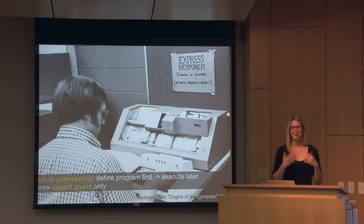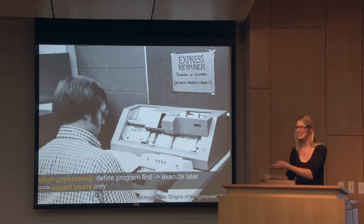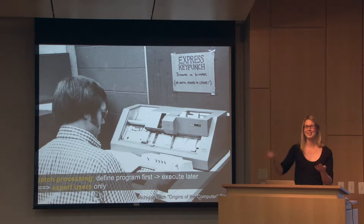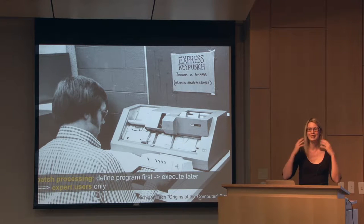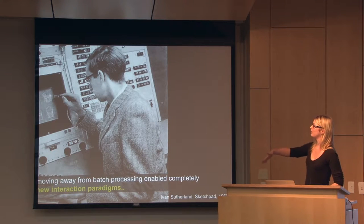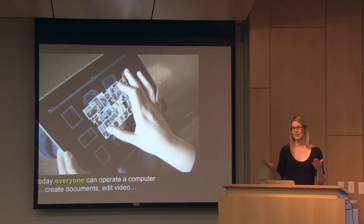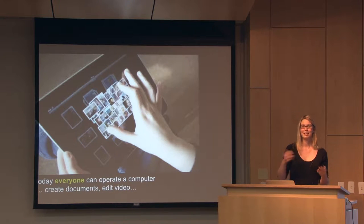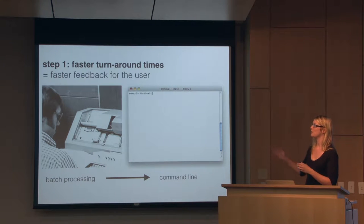3D printers are currently operated very similar to the batch processing style of punch cards in the early days of computing. You create your 3D model, start your print job in the evening, and then the next day you come back to see your result. If it wasn't what you expected, you have to do the entire cycle again and wait another day. Batch processing is really limited to expert users because they have to think a lot ahead — trial and error really doesn't work here. In the history of computing, when we moved away from batch processing, we enabled completely new interaction paradigms. This allowed a lot of people to use computers and do very complex tasks, such as document editing — which was an expert task in the 50s and 60s — and also video editing. I believe we should repeat this evolution for physical matter.